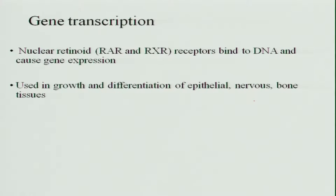The second function is gene transcription. The retinoids — RAR and RXR — are receptors which bind to DNA and cause gene expression. They are also used in the growth and differentiation of epithelial tissue, nervous tissue, and bone tissue.